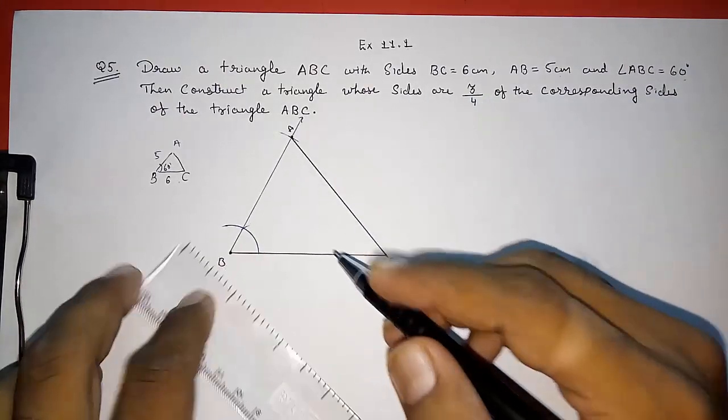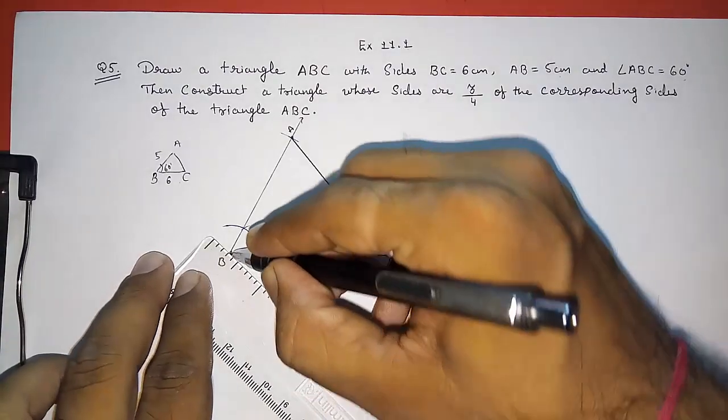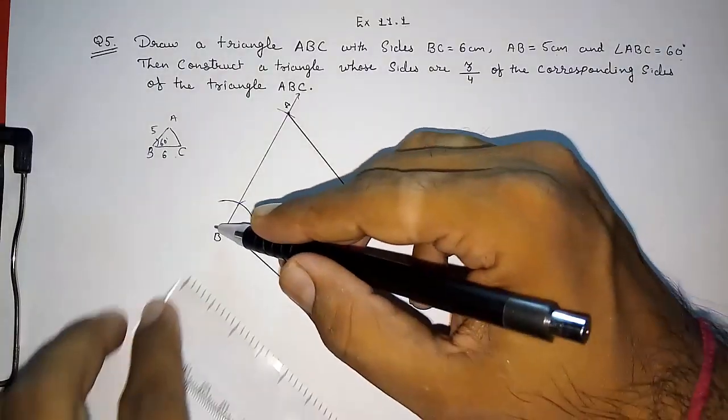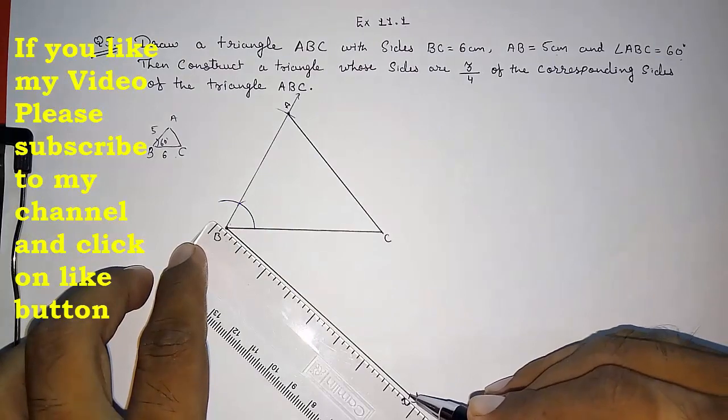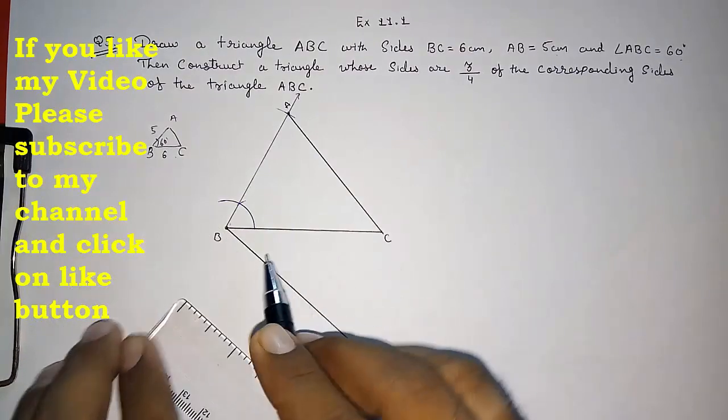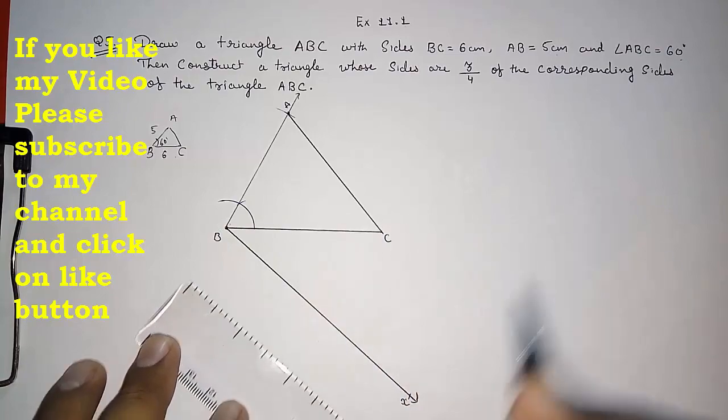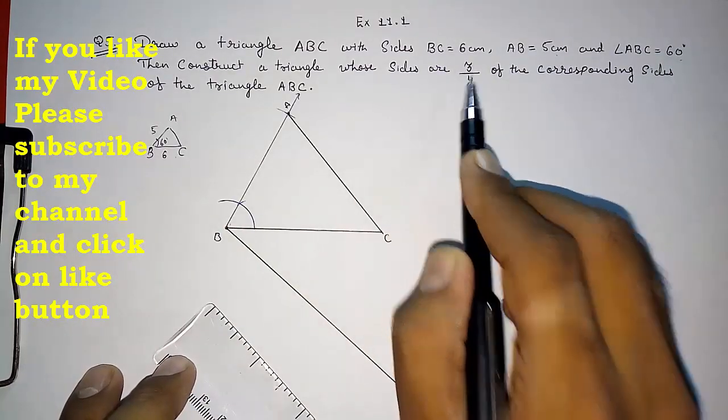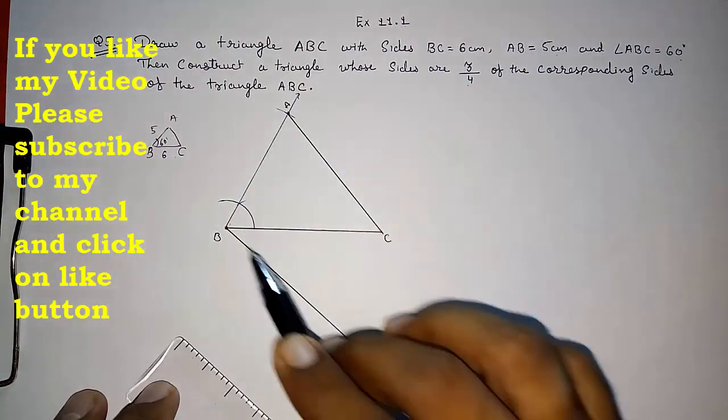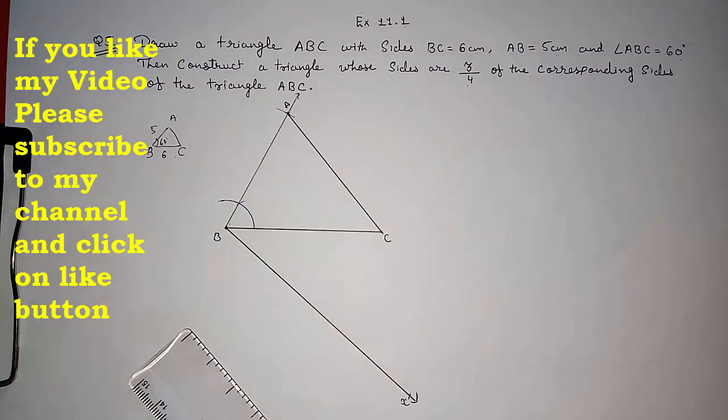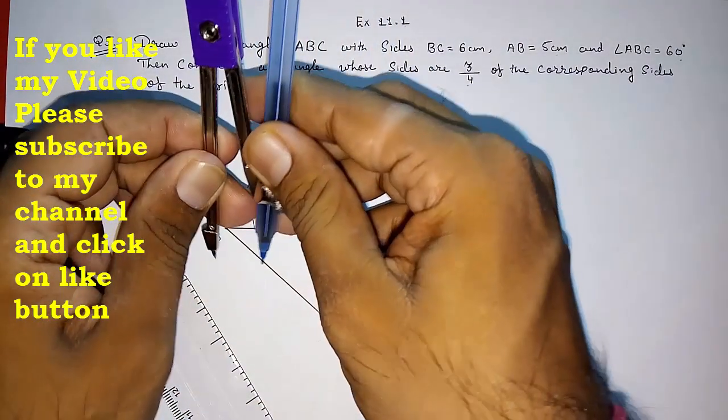So for that I have to extend or draw a ray from B. Look here I have drawn a ray BX. That BX should make acute angle with this BC. Now 3 by 4. So our triangle is 4 parts. So first I have to divide this BX into 4 parts.